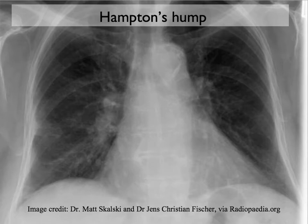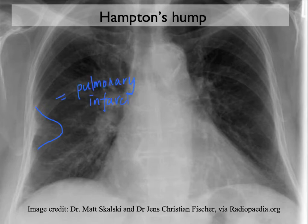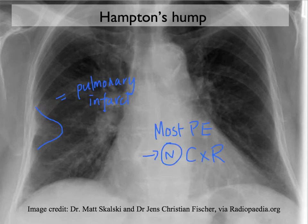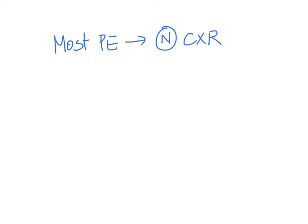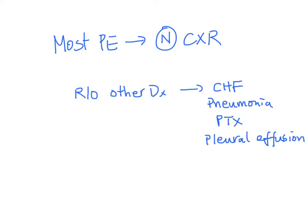Very rarely, we can see some chest X-ray changes in patients with a PE. In this chest X-ray, if you look at the right pleura, you can see a wedge-shaped hyperdensity. This represents an area of pulmonary infarct, also known as Hampton's hump. This is rarely seen — most patients with PE will have a normal chest X-ray. Therefore, the reason to do the chest X-ray is to rule out other diagnoses.